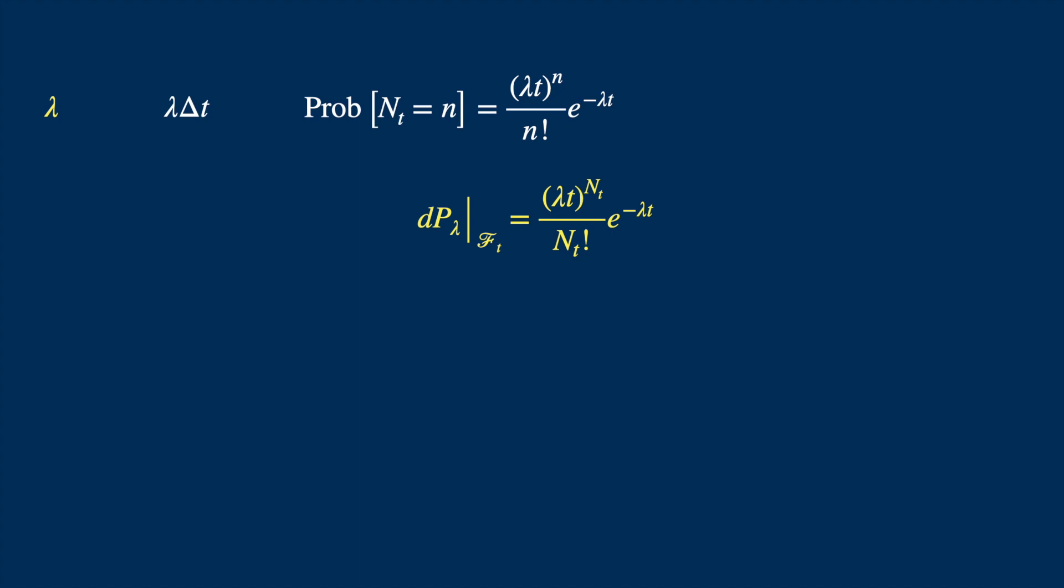Now let's say we have another process with parameter tilde lambda. So the probability will be as follows.